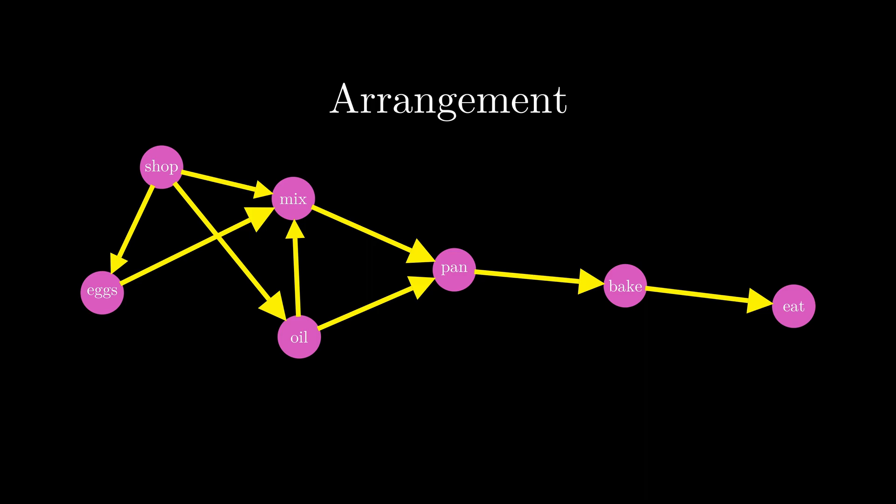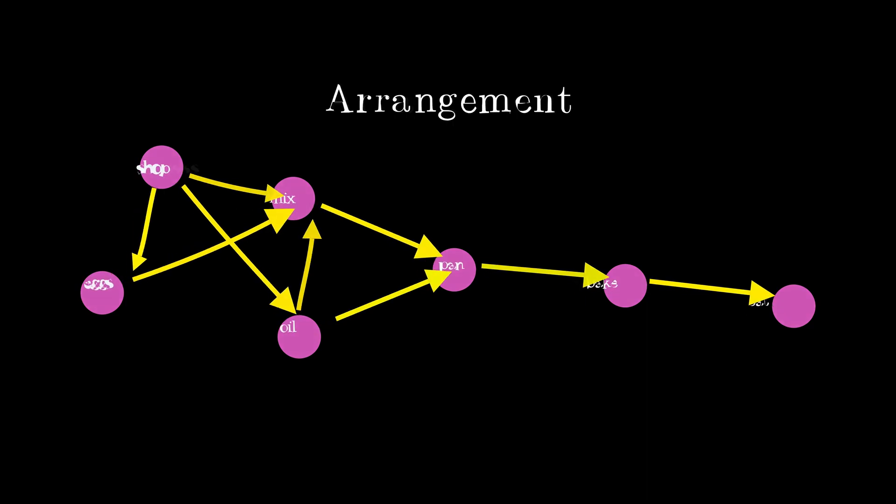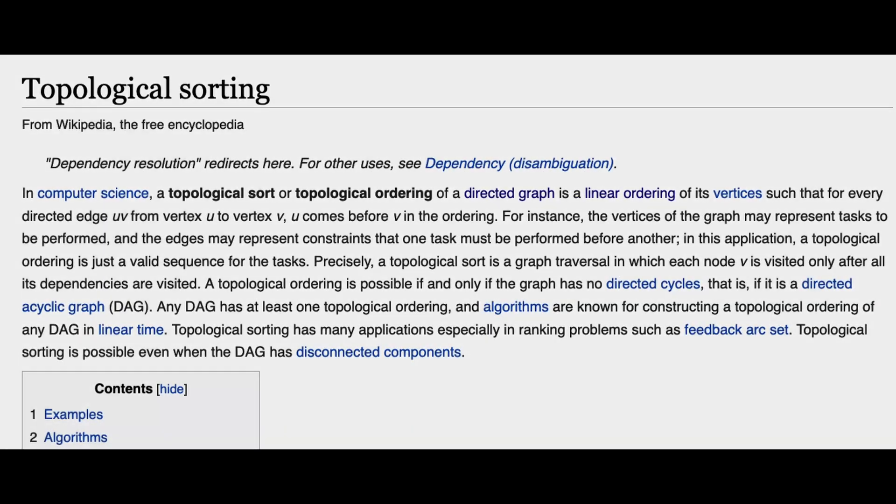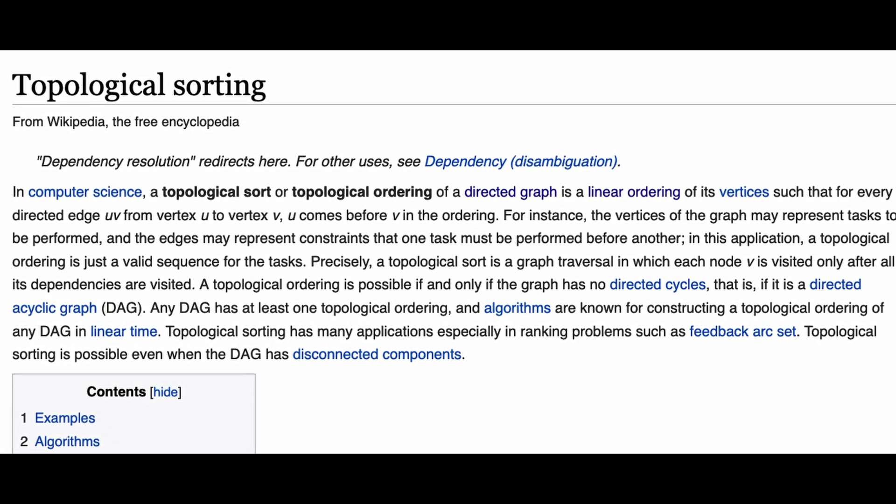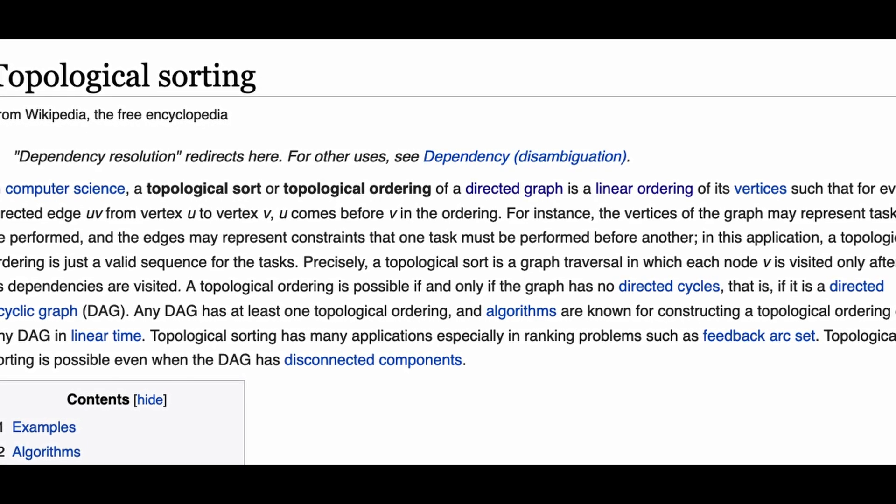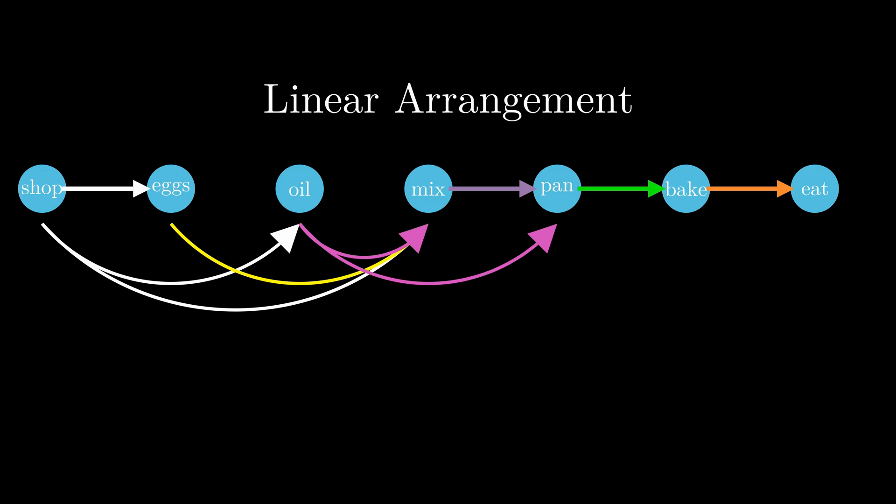So once we understand the topology or arrangement of tasks, all topological sort is doing is converting that arrangement from graph form to a linear ordering where each task comes after its dependencies. And that's actually what is meant by this confusing Wikipedia definition that says that topological ordering is a linear ordering of a graph's nodes where every directed edge. So now that we have an understanding of what topological sort is, we can now get into how we actually produce this linear structure using a topological sort algorithm on a directed acyclic graph.